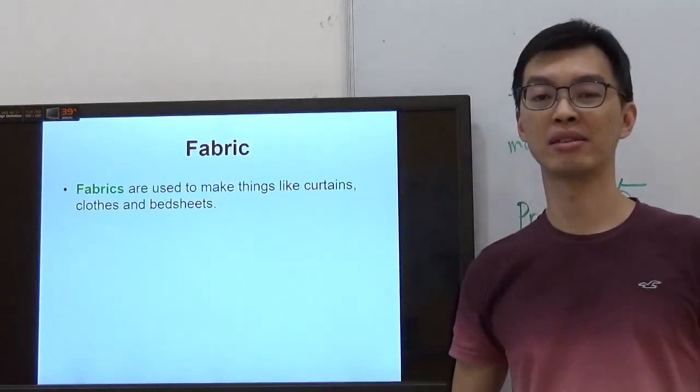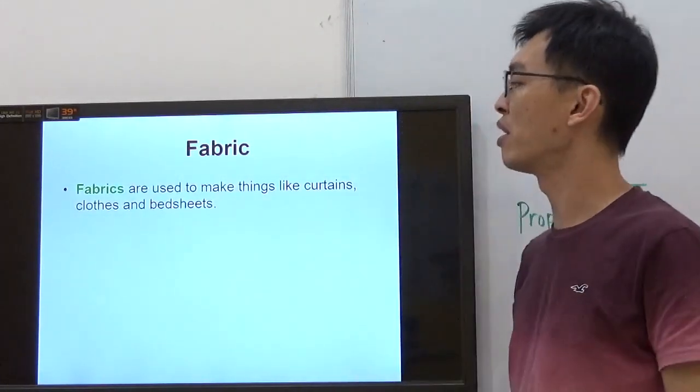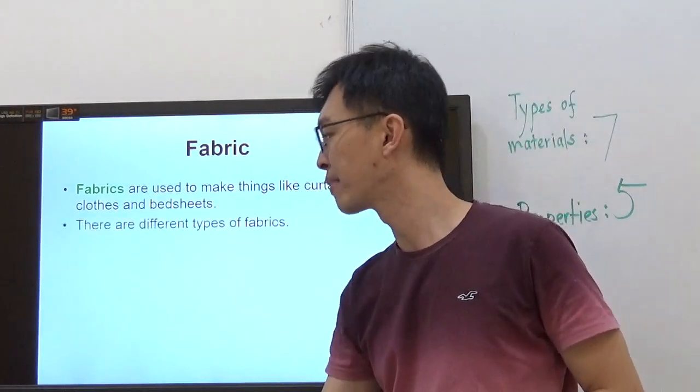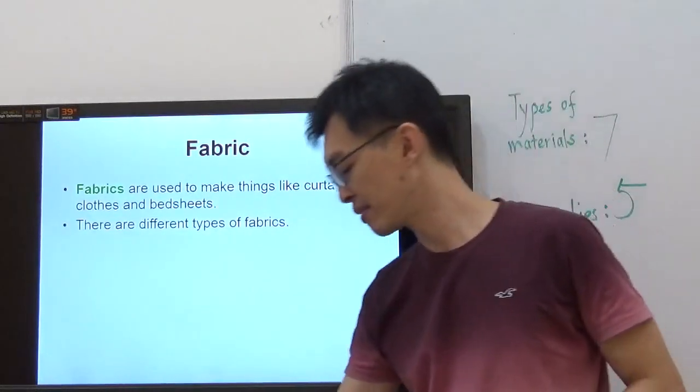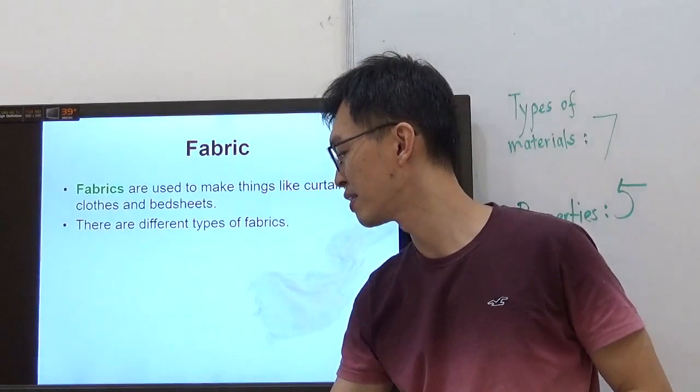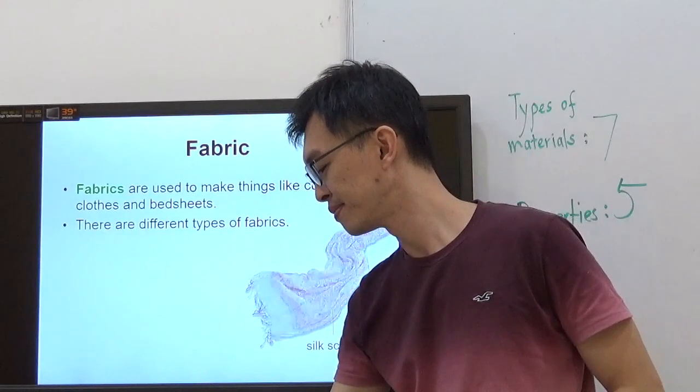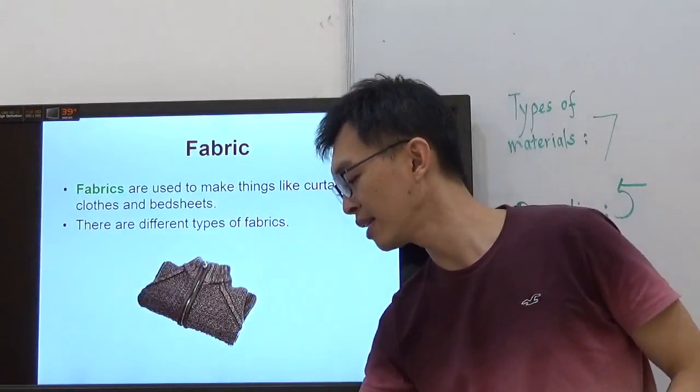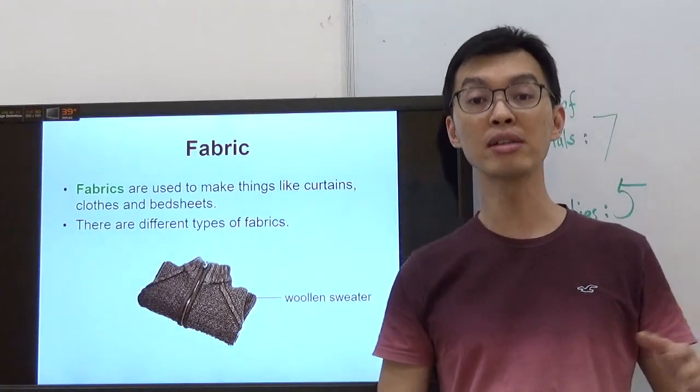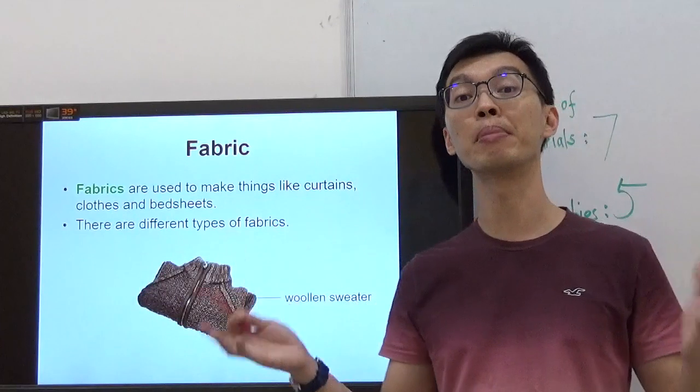Now, let's talk about fabric. Ah, the ones that I'm wearing right now, this is called fabric. So, fabric is used to make things like curtains, clothes, and bedsheets. There are different types of fabrics. Now, cotton, cotton comes from plants. In case you didn't know, there is something called cotton plant.